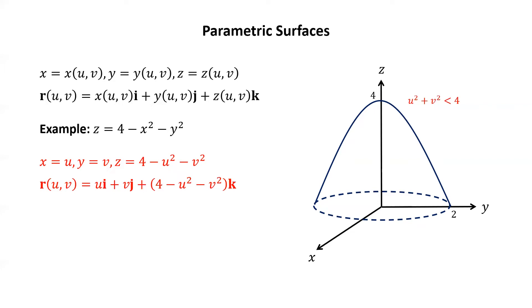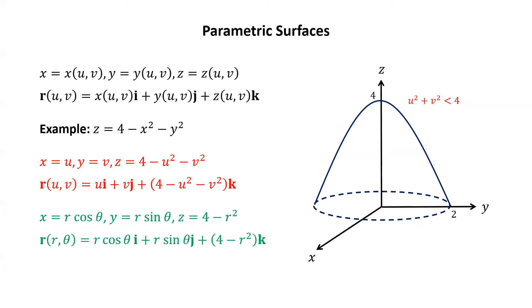Another nice way to parametrize this paraboloid is by using polar coordinates. Why don't you take a minute and try that yourself? Pause the video, try to parametrize this paraboloid using polar coordinates, and then resume to check your work. In this case, we let x equal r cosine theta, y equal r sine theta. Then z equals 4 minus r squared cosine squared theta minus r squared sine squared theta, which by the Pythagorean identity simplifies to 4 minus r squared. The corresponding vector-valued function is r of (r, theta) equals r cosine theta i plus r sine theta j plus (4 minus r squared)k.